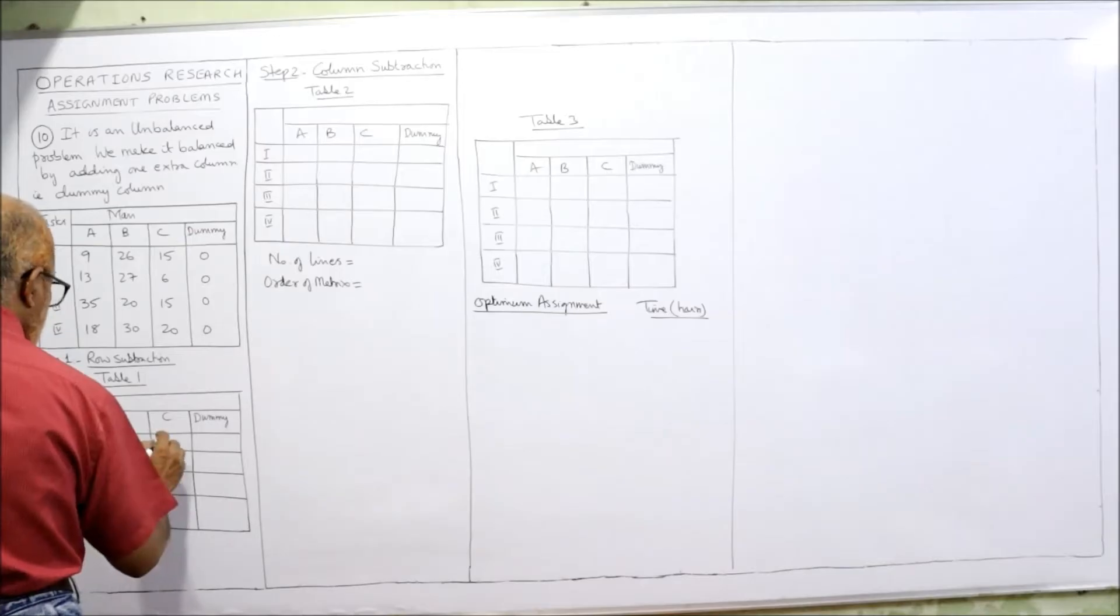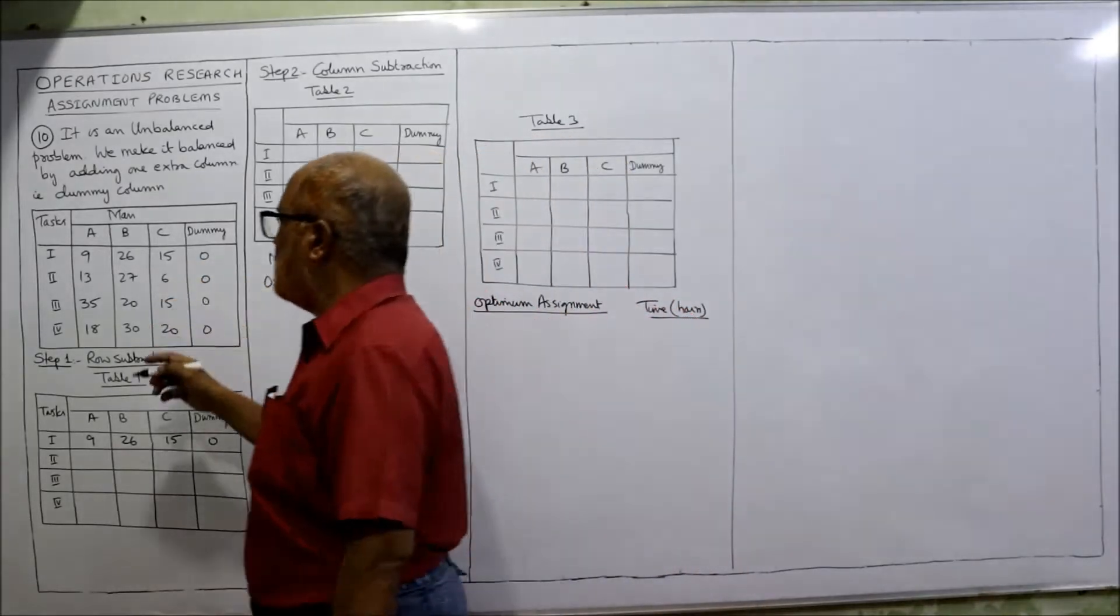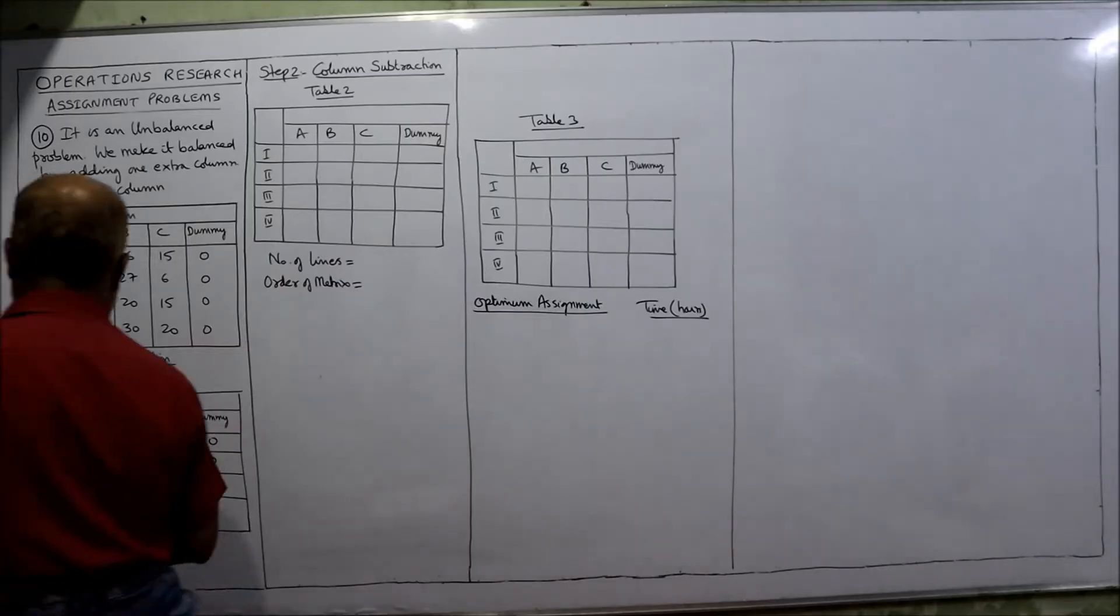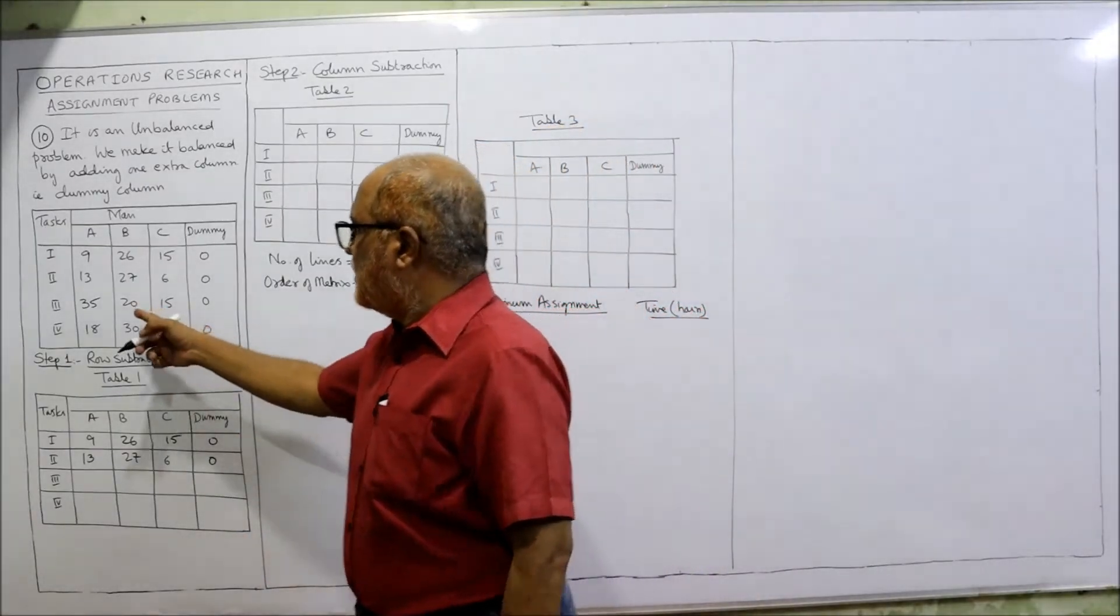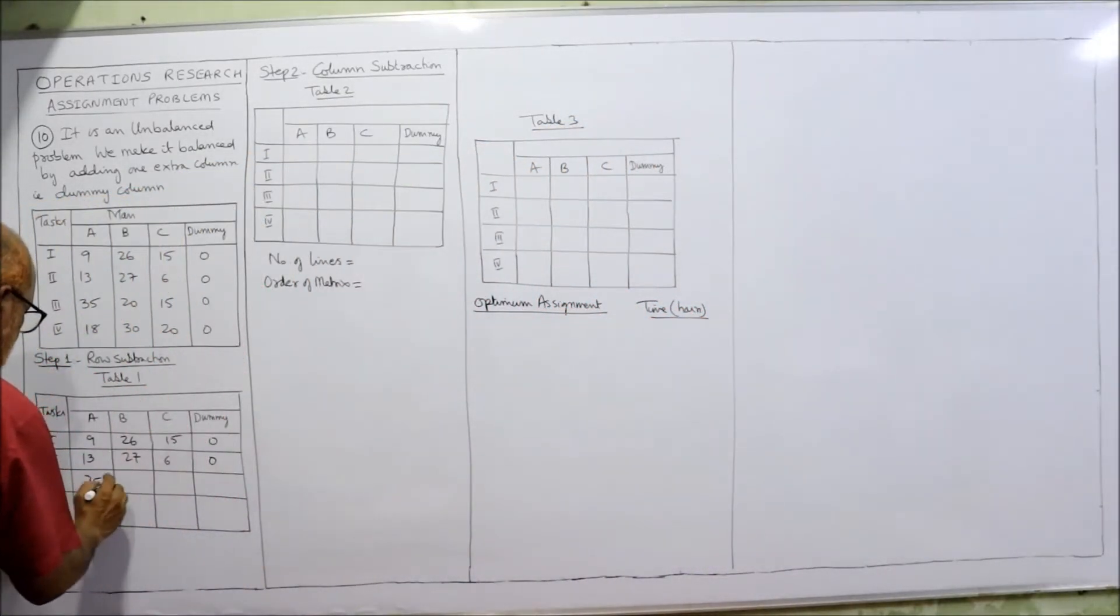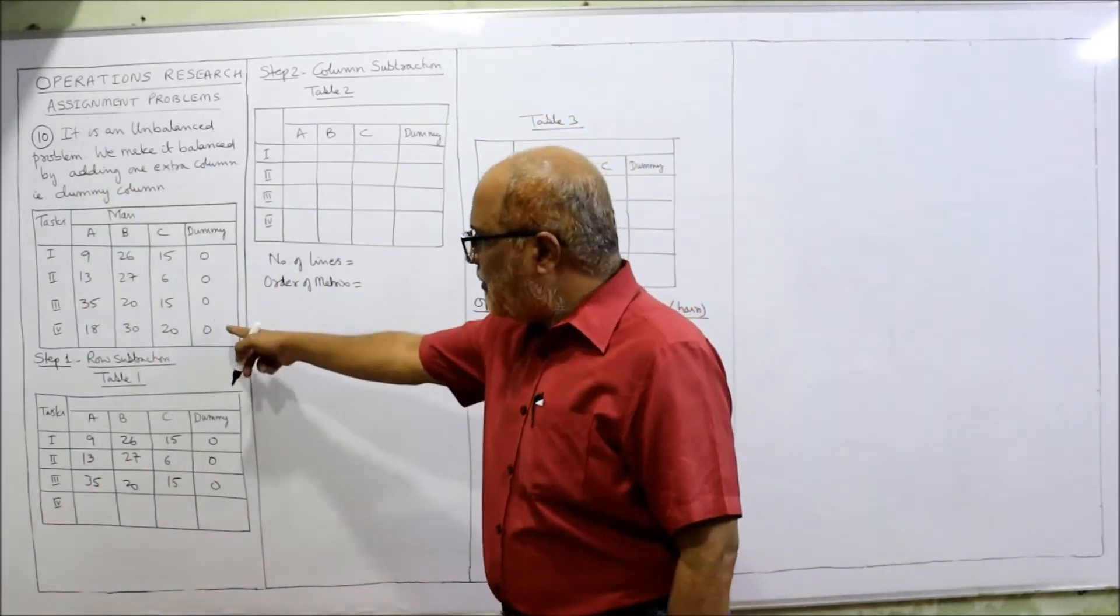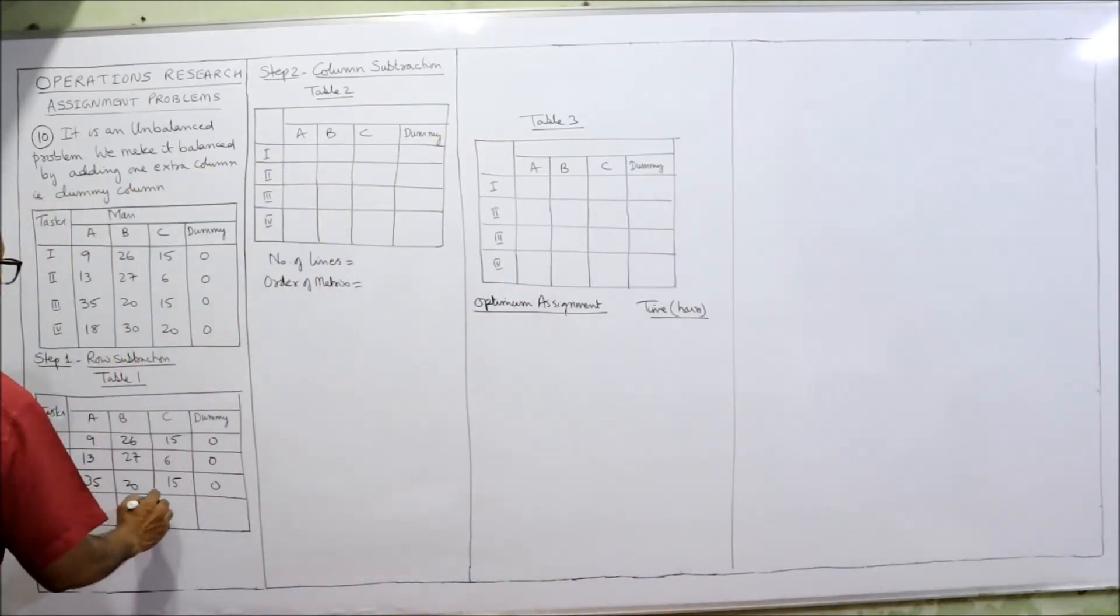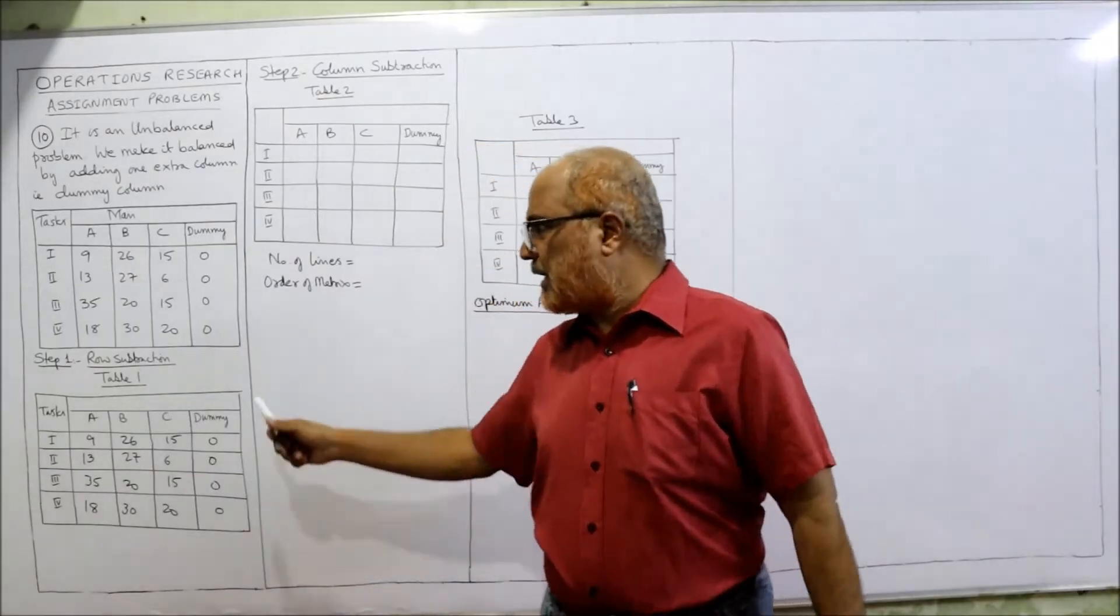0. Second row, again minimum is 0, so same values: 13, 27, 6, and 0. Third row, again minimum is 0, same values: 35, 20, 15, and 0. Last row, again minimum is 0, so same values will appear: 18, 30, 20, and 0. That's all, so first step completed - row subtraction.